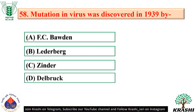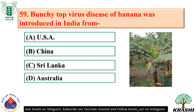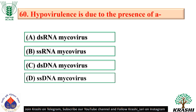Persistent viruses are taken up into and retained by insect tissues and are characterized by invading the salivary glands. Question number 58: Mutation in virus was discovered in 1939 by Delbruck — option D. Question number 59: Bunchy top virus disease of banana was introduced in India from Sri Lanka.